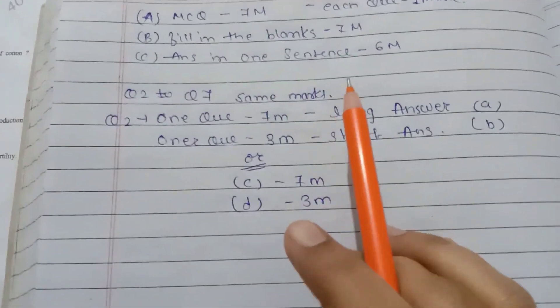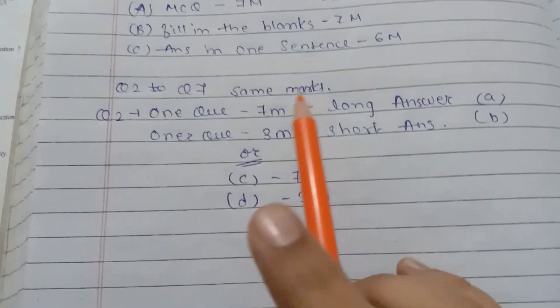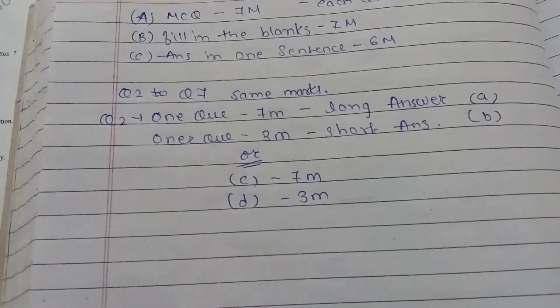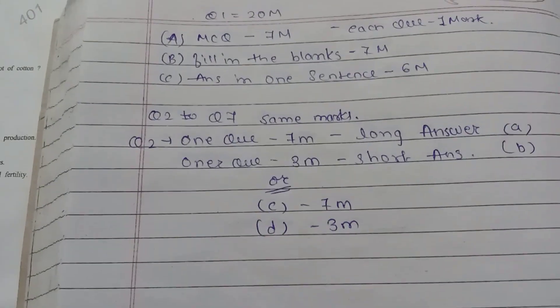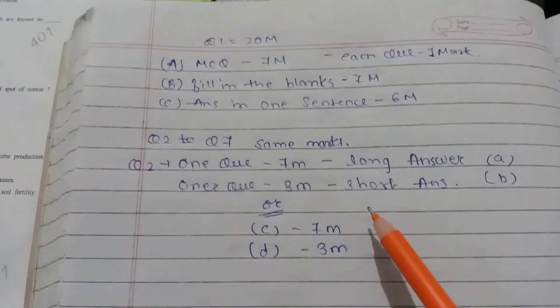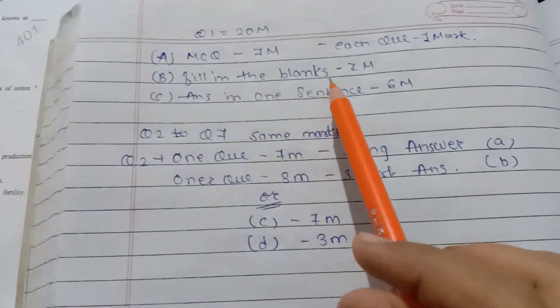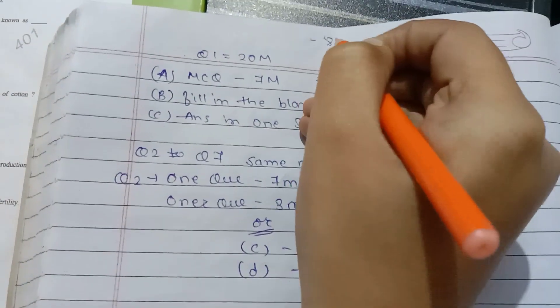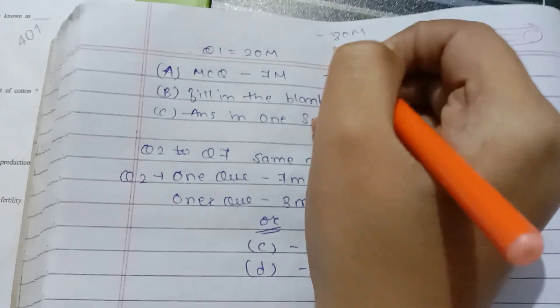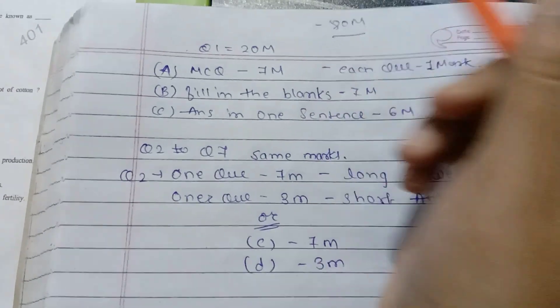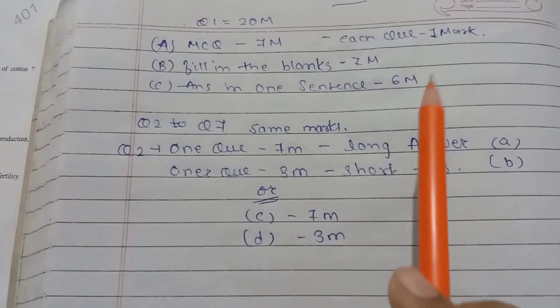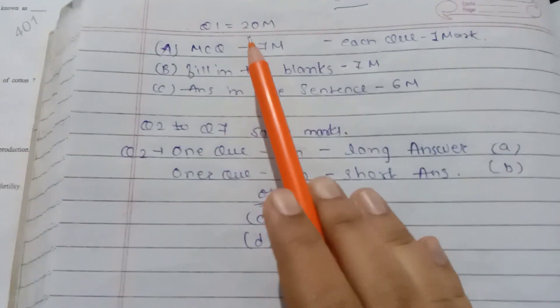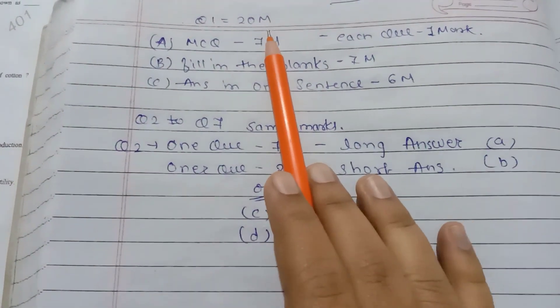Since our botany paper has come, it will be the same for the zoology paper. Our total theory paper is 80 marks. Question number 1 is 20 marks.